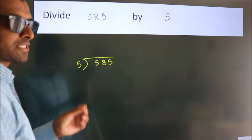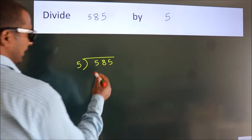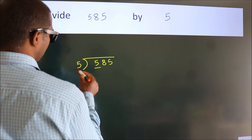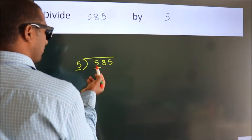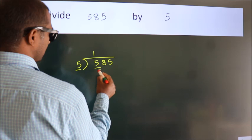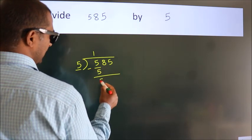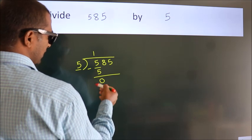This is your step 1. Next, here we have 5, here 5. When do we get 5? In 5 table, 5 once, 5. Now, we should subtract. We get 0.